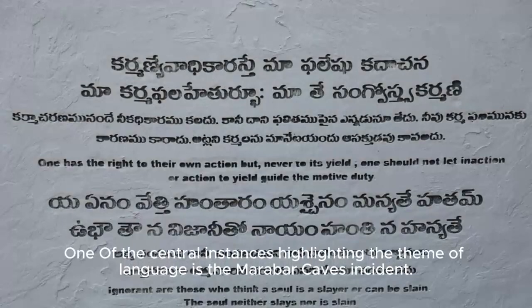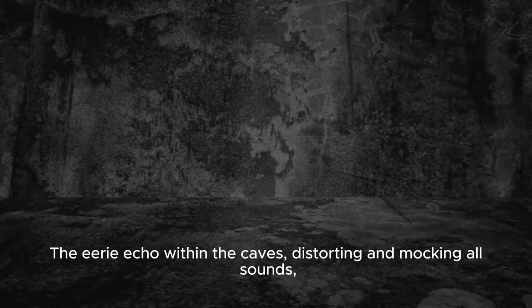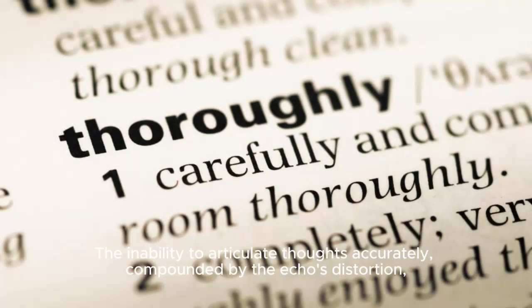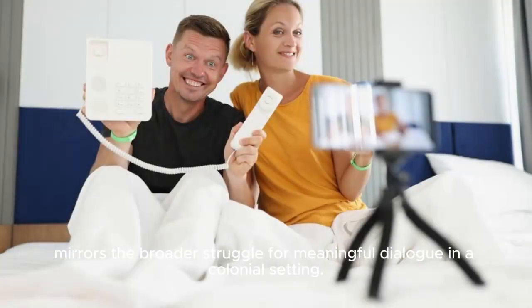One of the central instances highlighting the theme of language is the Marabar Caves incident. The eerie echo within the caves, distorting and mocking all sounds, serves as a metaphor for the miscommunication and misunderstanding that permeate the interactions between the British and Indians. The inability to articulate thoughts accurately, compounded by the echo's distortion, mirrors the broader struggle for meaningful dialogue in a colonial setting.